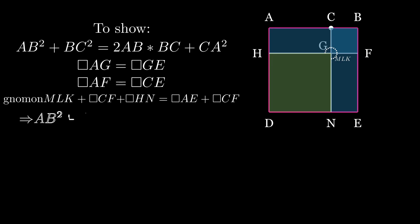It is therefore easy to see that AB squared plus CB squared is equal to 2 times AB times BC plus AC squared. So that's what we needed to show.